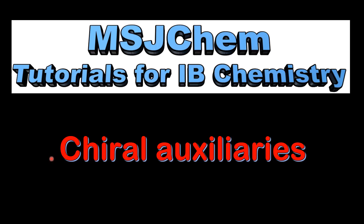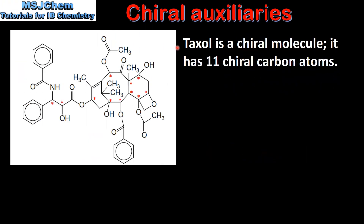This is MSJChem. In this video I'll be looking at chiral auxiliaries. Taxol, which is a drug used to treat cancer, is a chiral molecule. It has 11 chiral carbon atoms. A chiral carbon atom is a carbon atom that's bonded to 4 different atoms or groups.